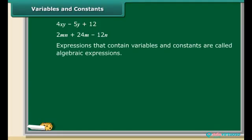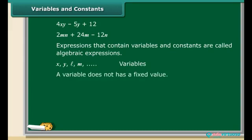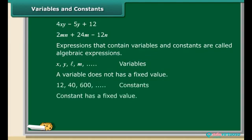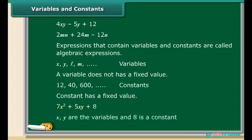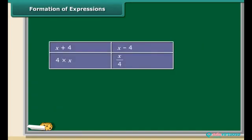Expressions that contain variables and constants are called algebraic expressions. The letters such as x, y, l, m, and so on are used to denote variables. A variable can take various values and its value is not fixed. On the other hand, a value that does not change is a constant. So in the equation 7x² + 5xy, x and y are the variables, and 8 is a constant.